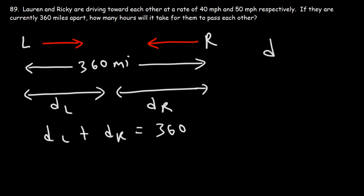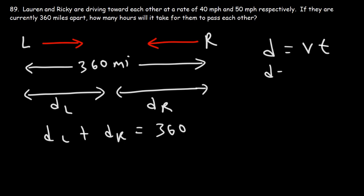Now this is a distance-rate-time problem. Distance is equal to the rate or the speed — in physics, V is like velocity or speed. Perhaps you've seen this equation: D equals RT. V and R both mean how fast the person is going. Now let's write an expression for Lauren, the distance that she travels, DL.